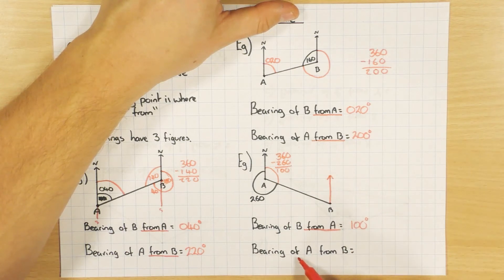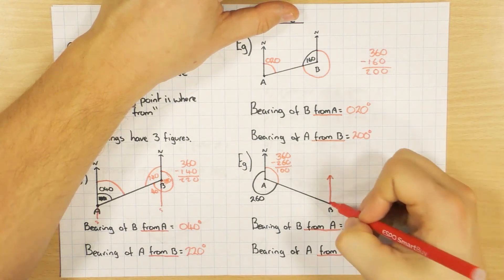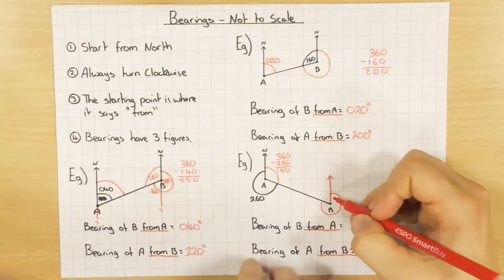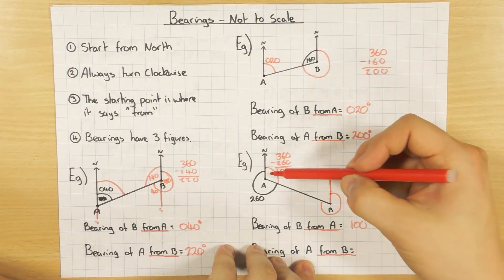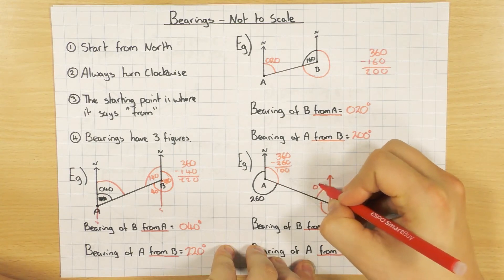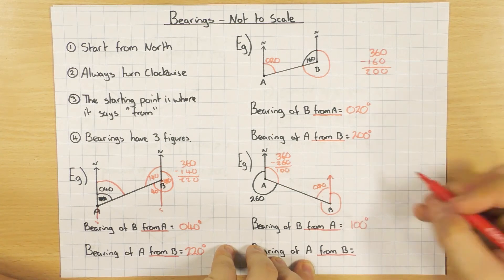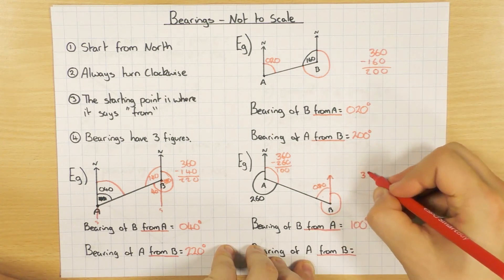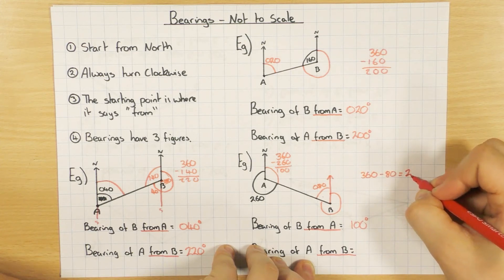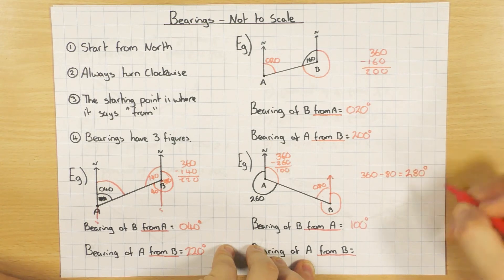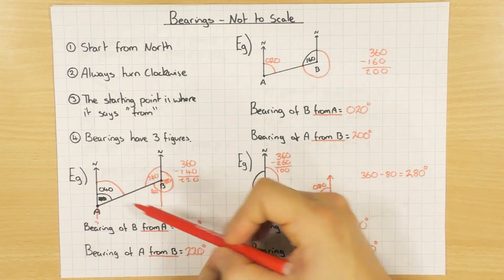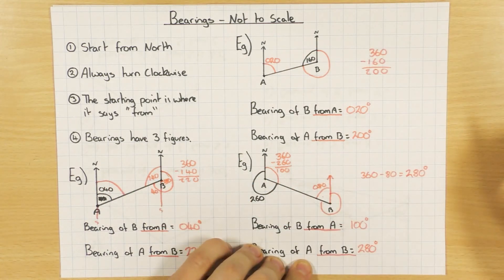For the bearing of A from B — from B going to A, north clockwise — that's the angle I need. If the previous bearing was 100 degrees, using the interior rule: 100 and the unknown add up to 180, so that's 080. Then 360 minus 80 gives 280 degrees. So the bearing of A from B is 280 degrees.